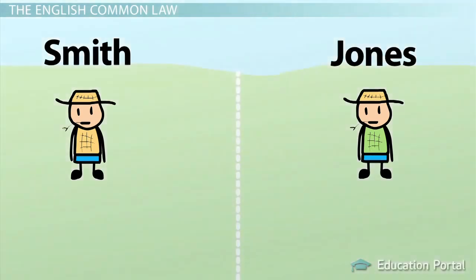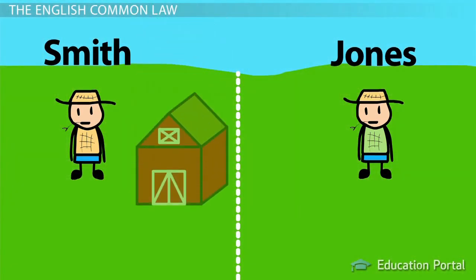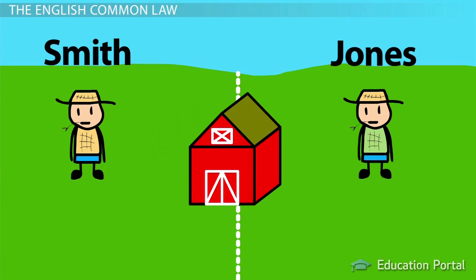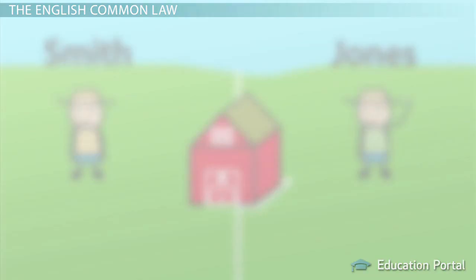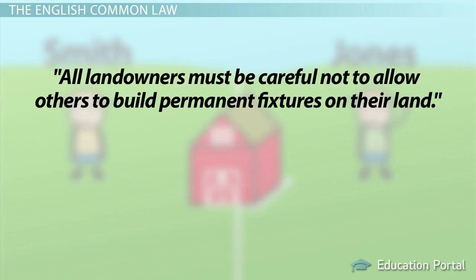For example, imagine that Smith and Jones own land adjacent to one another. Smith intends to build a barn on his own land, near his border with Jones. However, Smith inadvertently builds his barn on Jones' land. Jones claims ownership of the barn, and the two end up arguing their positions in court. Let's say the court decides that Smith owns the barn that he built, and he now also owns that small portion of land that the barn occupies. This would now be the rule to be applied for all cases coming after Smith and Jones. From that moment forward, all landowners must be careful not to allow others to build permanent fixtures on their land — otherwise, they could lose ownership of that portion of their land.